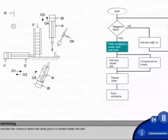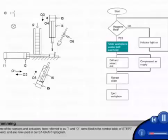Let us consider the scene in which the workpiece is moved under the drill. The name of the sensors and actuators, here referred to as I and O, were filled in the symbol table of Step 7 beforehand, and are now used in our S7 graph.